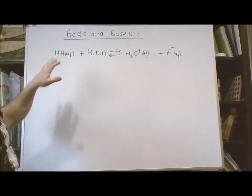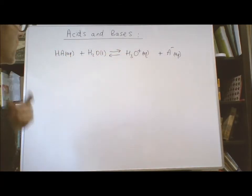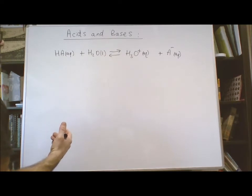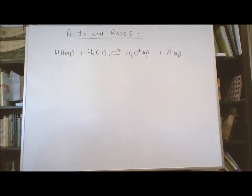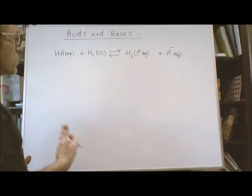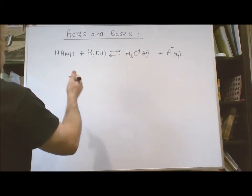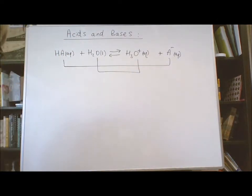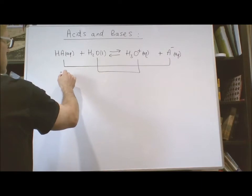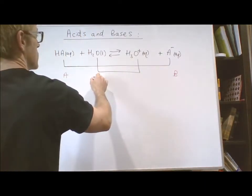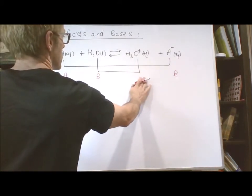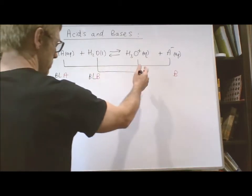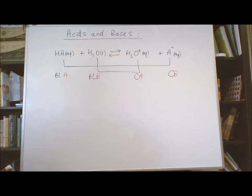Returning to our general acid-in-water equation to examine the relative strength of Brønsted-Lowry acids versus conjugate acids: the acid gives its conjugate base, and the base gives the conjugate acid. By definition, on the left are the Brønsted-Lowry acid and Brønsted-Lowry base; on the right are the conjugate acid and conjugate base.